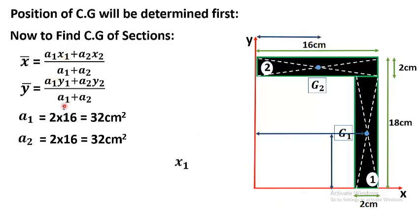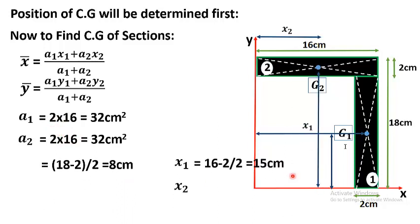We need to find x1, x2, y1, and y2. x1 is the distance of the centroid of figure 1 from the y-axis along the x-axis. The width of figure 1 is 2 cm, and dividing the remaining length gives x1 = 16 − 2/2 = 15 centimeters. So x1 is 15 centimeters.